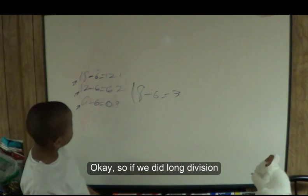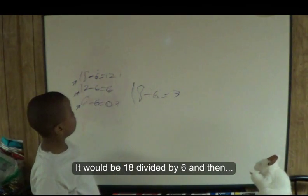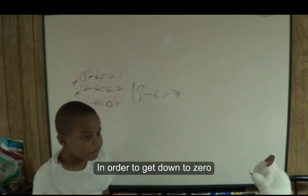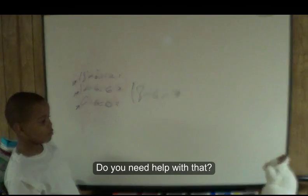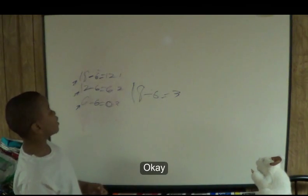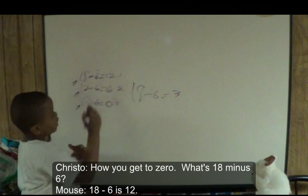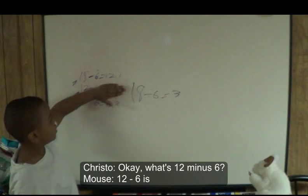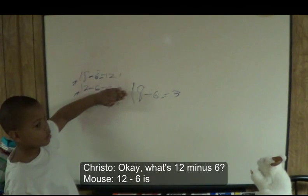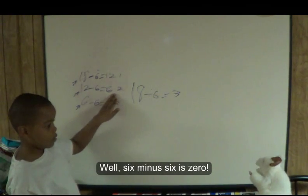So, if we did long division, it would be eighteen divided by six. And then, in order to get down to zero — do you need help with that? Yes, please. Show me. Okay. How do you get to zero? What's eighteen minus six? Eighteen minus six is twelve. Okay. What's twelve minus six? Twelve minus six is six. Okay. Now, what's six minus six? Well, six minus six is zero.